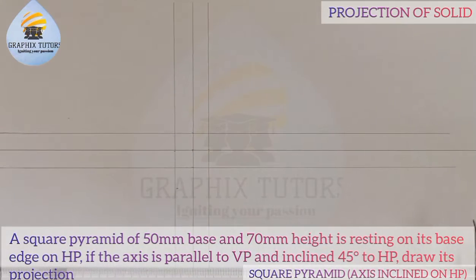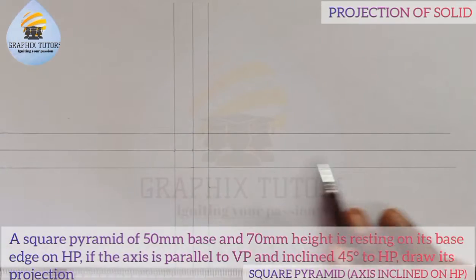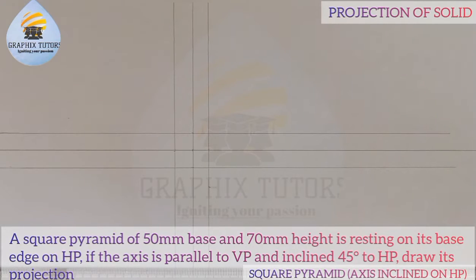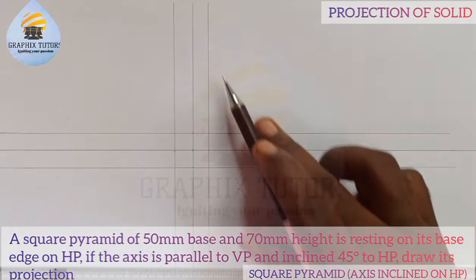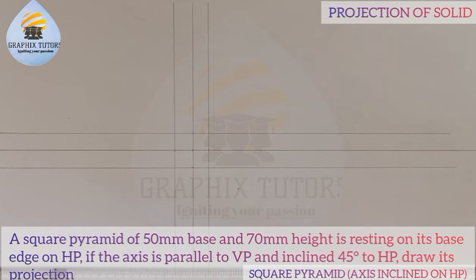Now you need to know: anything on the x-axis is said to be on the HP — horizontal plane. Anything on the y-axis is on the vertical plane. So first of all, we said it is a square pyramid.